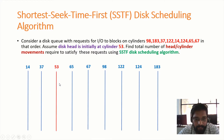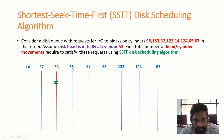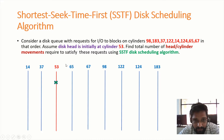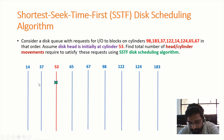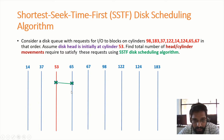Let me mark the disk head at cylinder number 53. Now, in order to satisfy the requests present in the queue, I need to identify which cylinder is nearer to cylinder number 53. Since 53 minus 65 is less than 53 minus 37, cylinder number 65 is nearer to cylinder number 53 compared to cylinder number 37. Therefore, I need to move the disk head towards cylinder number 65.